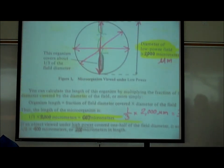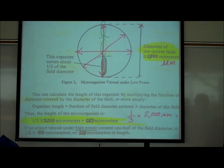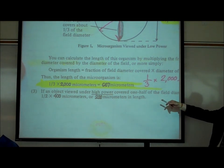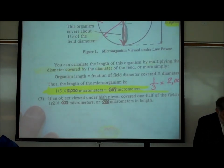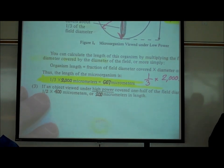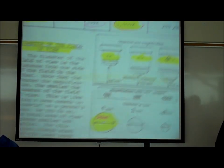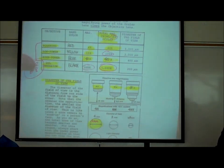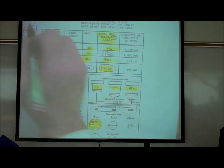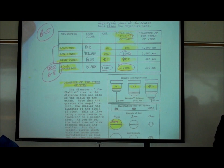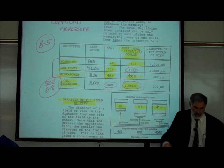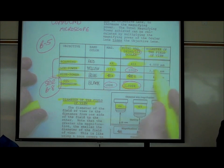What if that organism was at a different magnification? We need to know what the diameter of the field of view is at different magnifications. The chart on page B5 tells you the diameter of the field of view at different magnifications, because as you zoom in on somebody, you're seeing a smaller area.